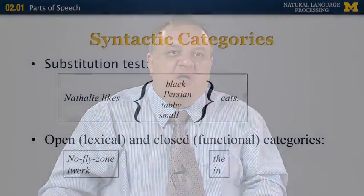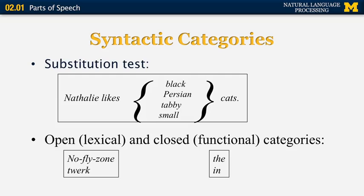The next segment is about the different parts of speech that exist in language. For example, in a sentence like 'Nathalie likes black cats,' we can replace the word 'black' with 'Persian,' 'tabby,' or 'small' and still have sentences that make sense. Since these words can be used in the same position, they are referred to as the same syntactic category — in this case, an adjective.